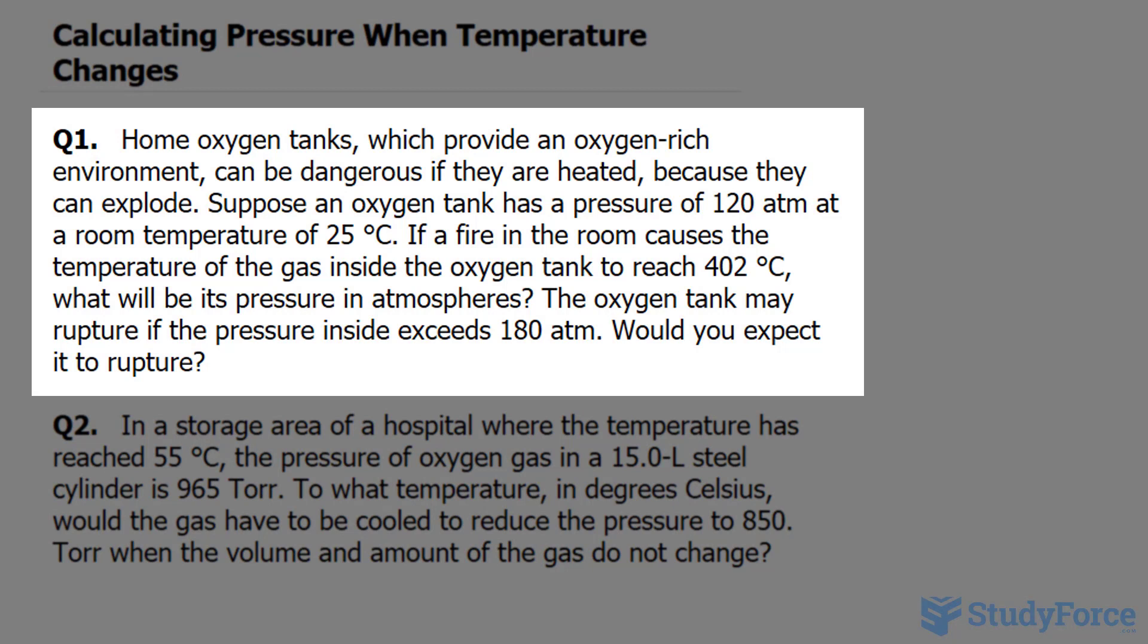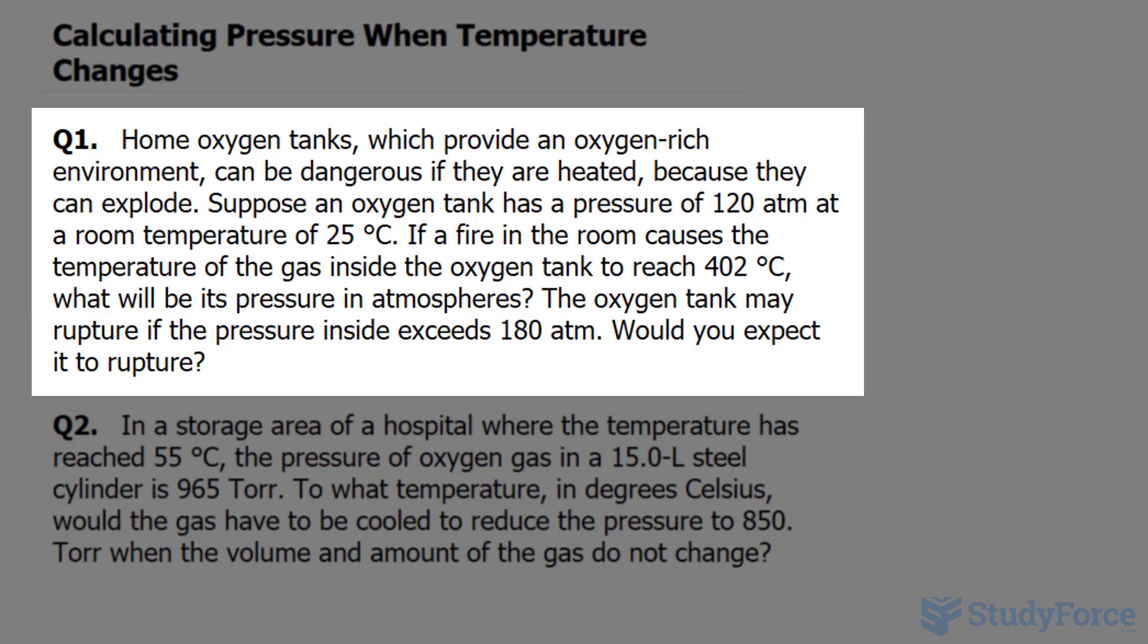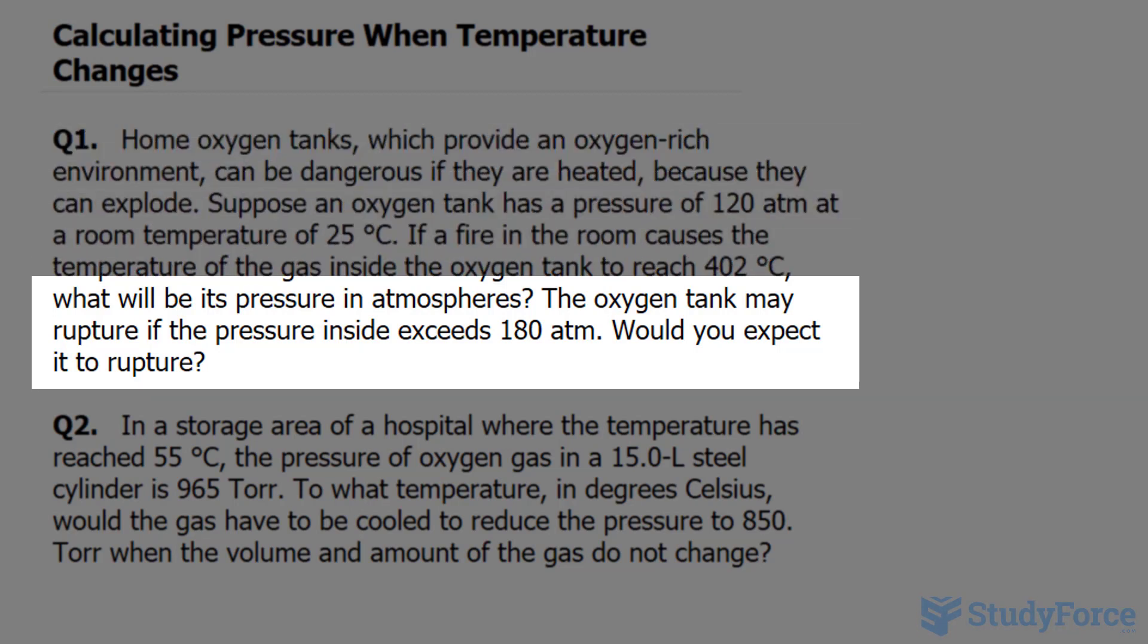Question 1 reads: Home oxygen tanks, which provide an oxygen-rich environment, can be dangerous if they are heated because they can explode. Suppose an oxygen tank has a pressure of 120 atm at a room temperature of 25°C. If a fire in the room causes the temperature of the gas inside the oxygen tank to reach 402°C, what will be its pressure in atmospheres? The oxygen tank may rupture if the pressure inside exceeds 180 atm. Would you expect it to rupture?